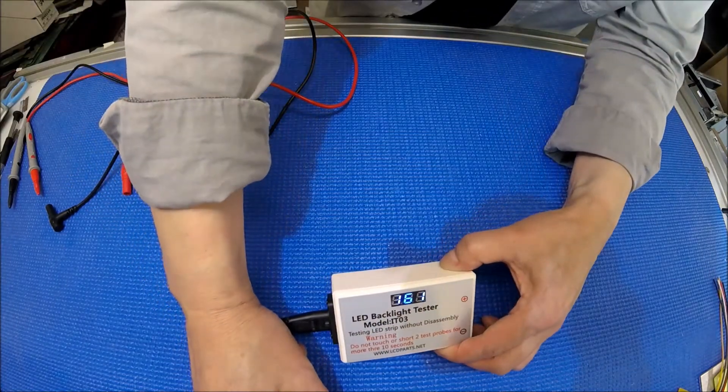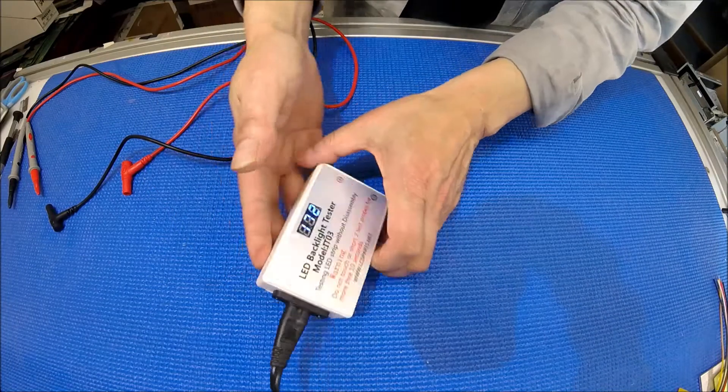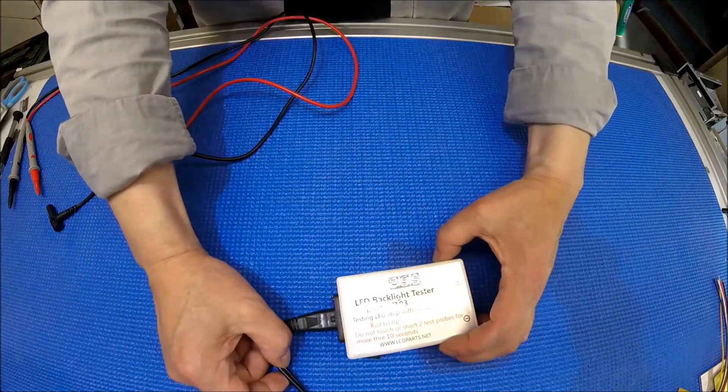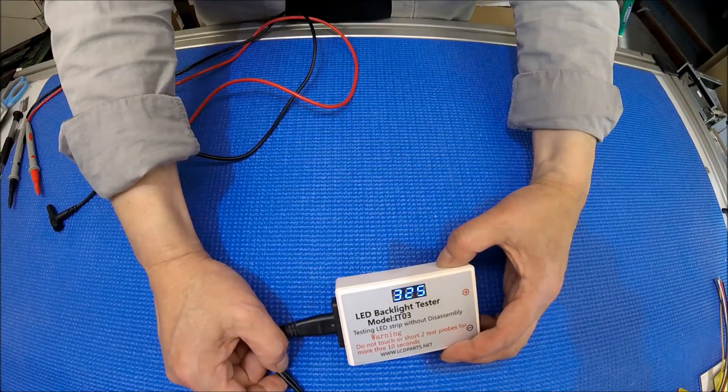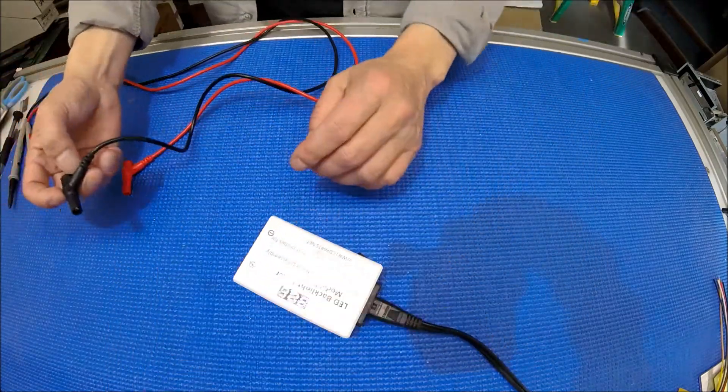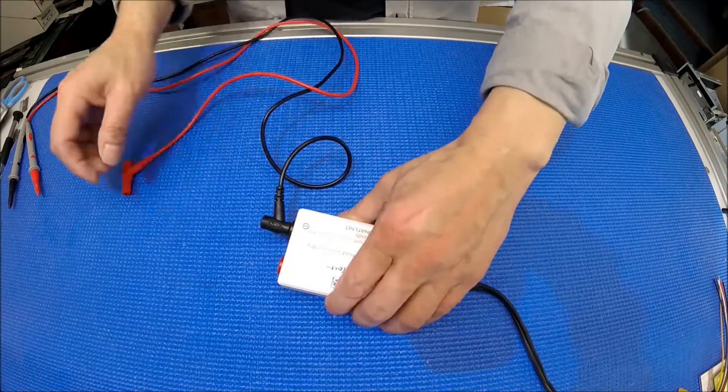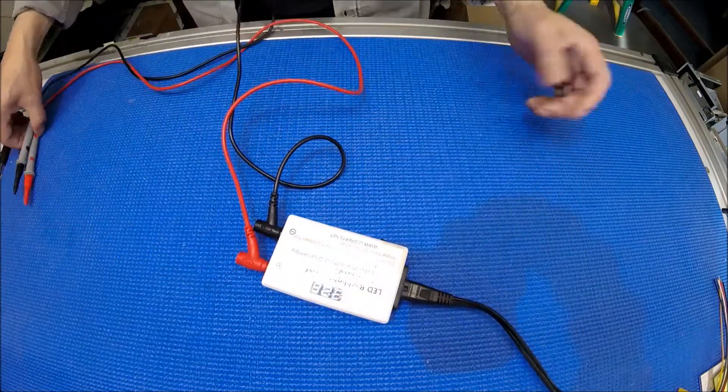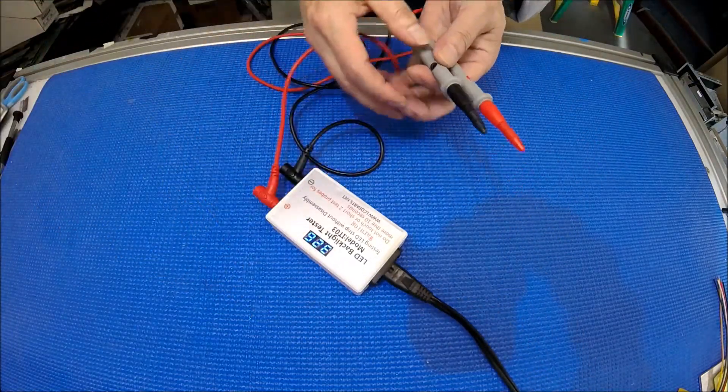Right now it's at 160 volts. Just wait until it charges up to... here we go, 326 volts. Now you can use it. Basically, just connect the black pole here. Remember, it's at 326 volts now.